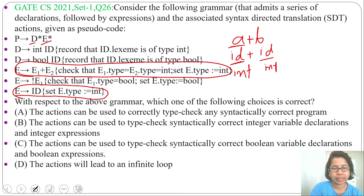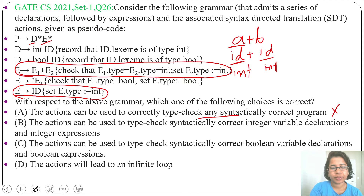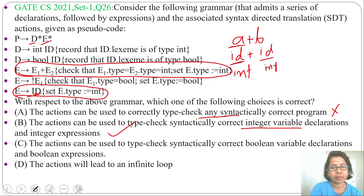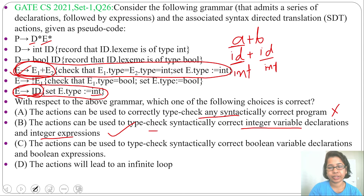Let's check the options. Option A: the action can be used to correctly type-check any syntactically correct program. This is wrong — it will not check any syntactically correct program. Option B: the action can be used to type-check syntactically correct integer variable declarations and integer expressions. This is correct. It will check syntactically correct integer variables, since id can only be integer, and integer expressions — E generates the addition expression and id, and that id can only be integer. So option B is correct.